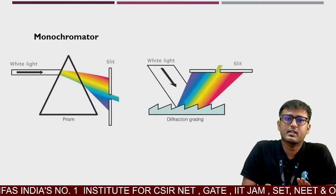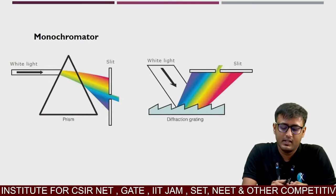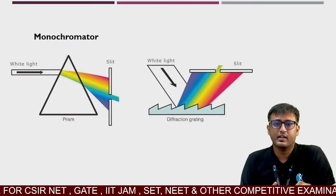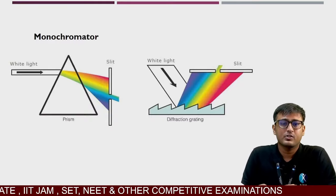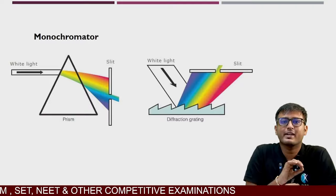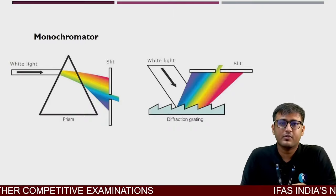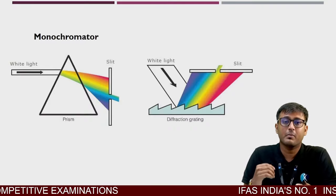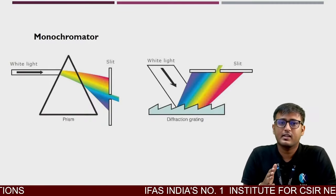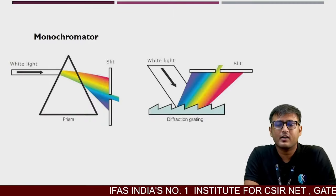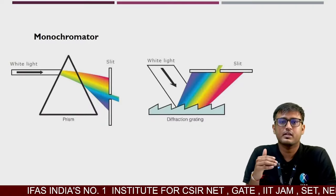Monochromator ke liye usually spectrophotometer mein do type ke monochromator use hote hain for splitting white light: one is the prism and the other is the diffraction grating. Unka kaam white light ko uske components mein split karna hai. White light ek polychromatic light hai, usko hume ek monochromatic light banani hai — slit se pass karwa ke, monochromator se pass karwa ke, phir ek aur slit se pass karwa ke, so that humara desired wavelength — say 280 nm — illuminate ho sake humare biomolecule pe.